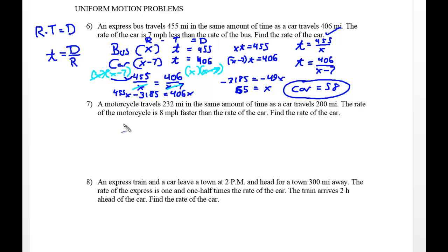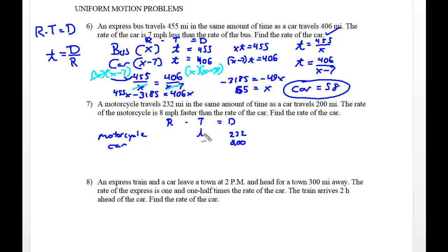Let's move to the next problem. A motorcycle travels 232 miles in the same amount of time a car travels 200 miles — so the t is exactly the same. The rate of the motorcycle is 8 miles per hour faster than the rate of the car, so the motorcycle is x plus 8 and the car is just x.